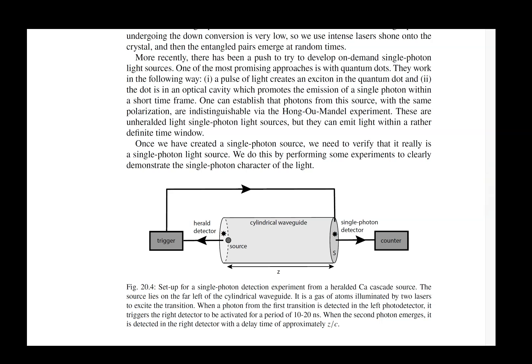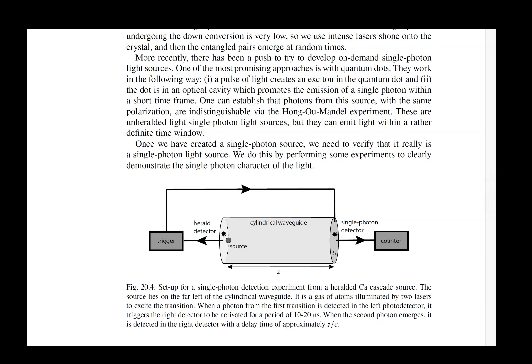It uses parametric down conversion, and those are often heralded photons as well. There is current work that is trying to make single photon sources on demand—you push a button and a photon comes out. Those use quantum dots to make them, and they're starting to get quite efficient.